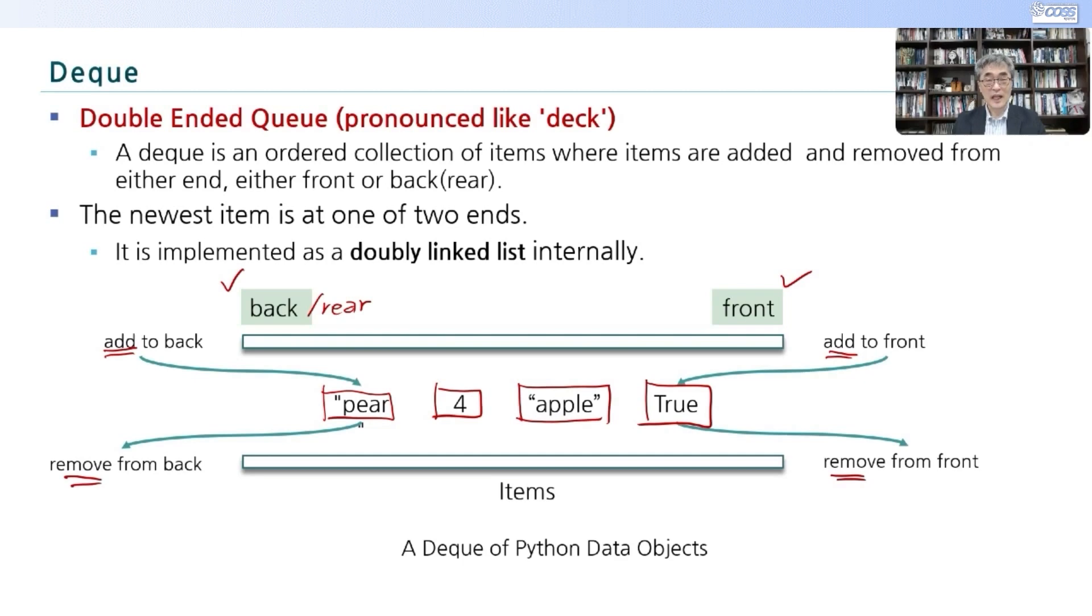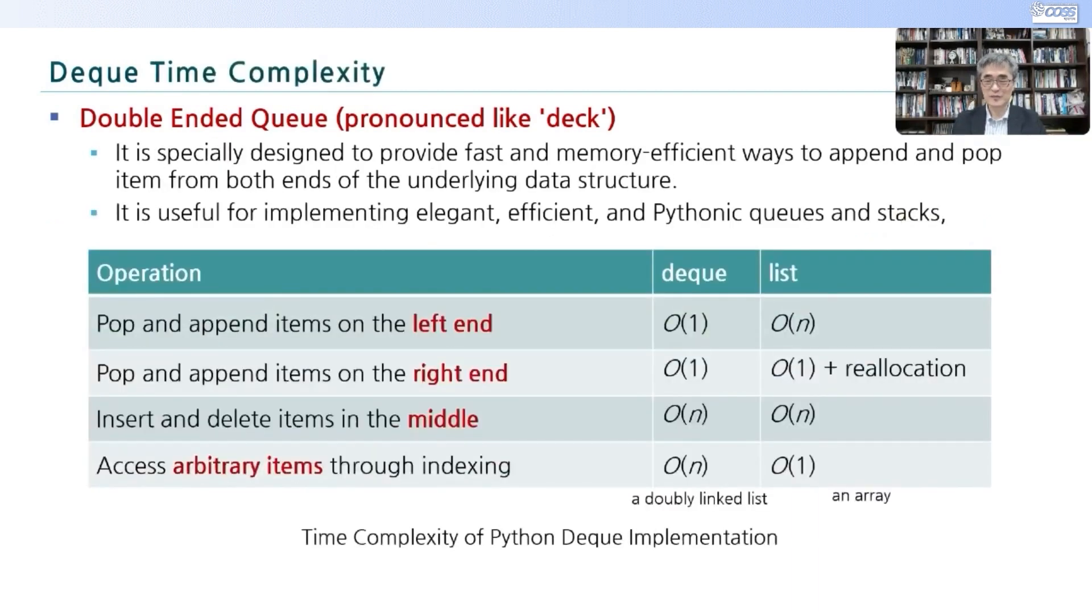좀 더 살펴보면요. 이렇게 만든 이유 중에 하나는 time complexity입니다. 우리 stack하고 queue를 배우면서 이게 big O of one인지 big O of n인지 늘 관심사였잖아요. 그죠? 근데 이 관심사를 가진 이유는 속도 때문에 그렇습니다. 한번 보실래요? 우리가 queue를 구현했을때 list를 사용해서 구현한 적이 있는데 그때 이렇게 left-end에는 big O of n이구요. right-end에는 big O of one입니다.